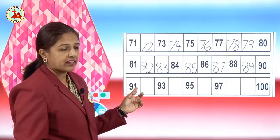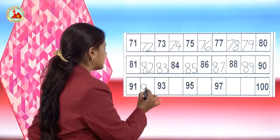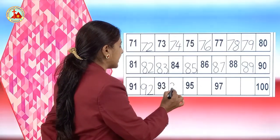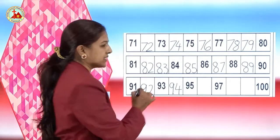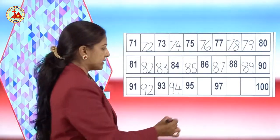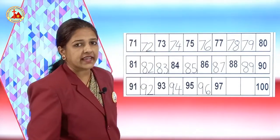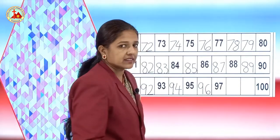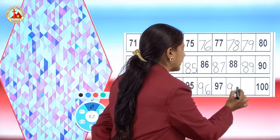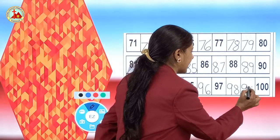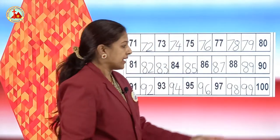After 90, 91. The next number is 92, then 93. Then 94 is missing — that you have to write. 95 is written. The next missing number is 96. Then 97 is written. After 97, 98. After 98, 99. And the last number, 100, is written.